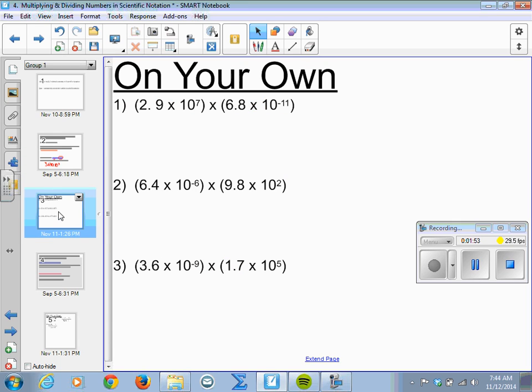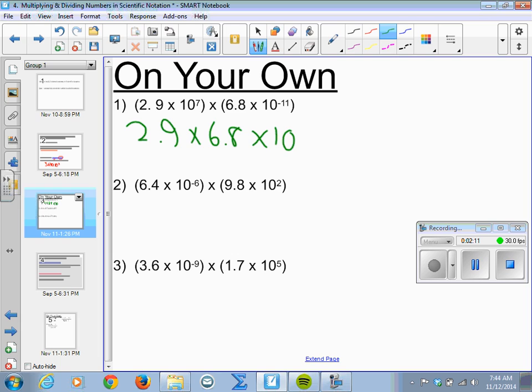So go ahead, if you want, and pause the video and try these three problems on your own, or keep the video on and do them with me. So I'm going to rearrange the first set of numbers. And my pen stopped working. There it goes. So grab a calculator. 2.9 times 6.8 gives me 19.72, and we add the exponents together, we get 10 to the negative 4th.